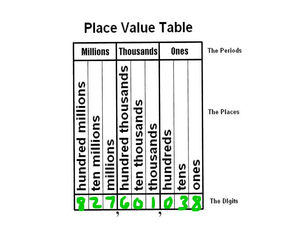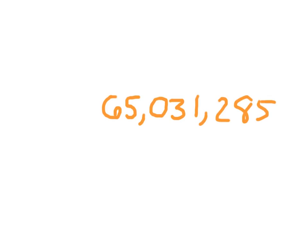Let's look at some more of these numbers, this time without a place value table. This number is written in standard form. I might ask you to read the number, write it in word form, or write it in expanded notation. If I asked you to read this number, concentrate on the periods. This is the first period, where we have the digits 6 and 5 — that's 65 — so the number is 65,031,285.